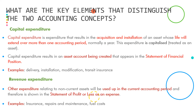Revenue expenditure, on the other hand, is expenditure which is used up in the current accounting period only - it doesn't extend the life of that asset to another accounting period, and it is shown in the statement of profit or loss as an expense. Examples include insurance, repairs and maintenance, and fuel costs. The structure of your answer must include those important red accounting terms and terminology to get the maximum marks.